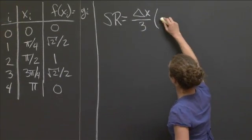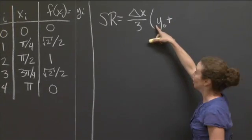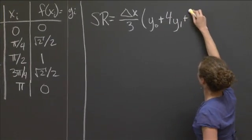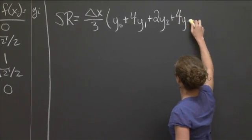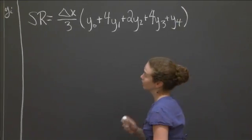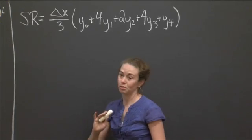And then I have these funny coefficients, which at some point we will explain. I have a 1 in front of y0, a 4 in front of y1, 2 in front of y2, a 4 in front of y3, and a 1 in front of the y sub 4. So that's exactly the coefficients for Simpson's rule.